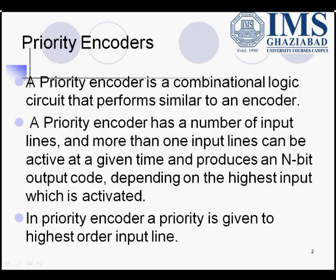A priority encoder is a combinational circuit that is similar to an encoder. In an encoder, we have discussed that out of n input lines, only one input is active at a particular point of time. Whereas in a priority encoder, out of n input lines, any number of lines can be high at a particular point of time, but the output depends on the highest input which is activated. Say I0 and I2 both are active at a particular point of time — the output would depend on input I2 rather than input I0. That is, priority would be given to input I2. So in a priority encoder, priority is given to the highest order input line, and based on this input line, the output is generated.